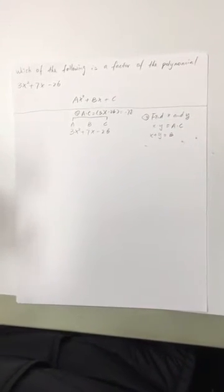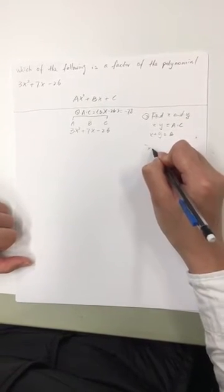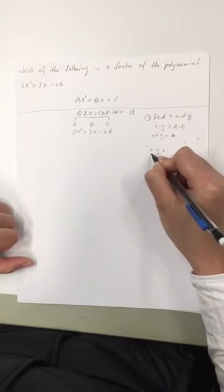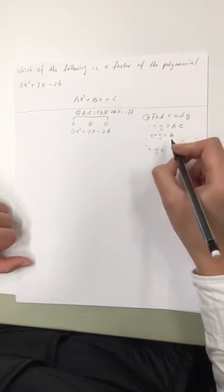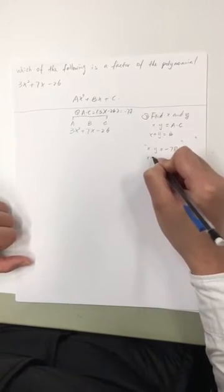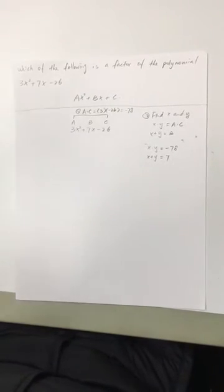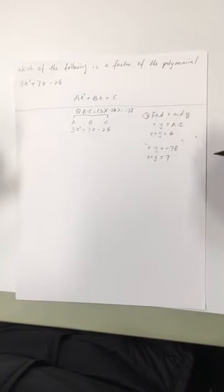So in this problem, we try to find two numbers, x and y. The product of x and y should equal to negative 78. The sum of x and y should equal to 7.